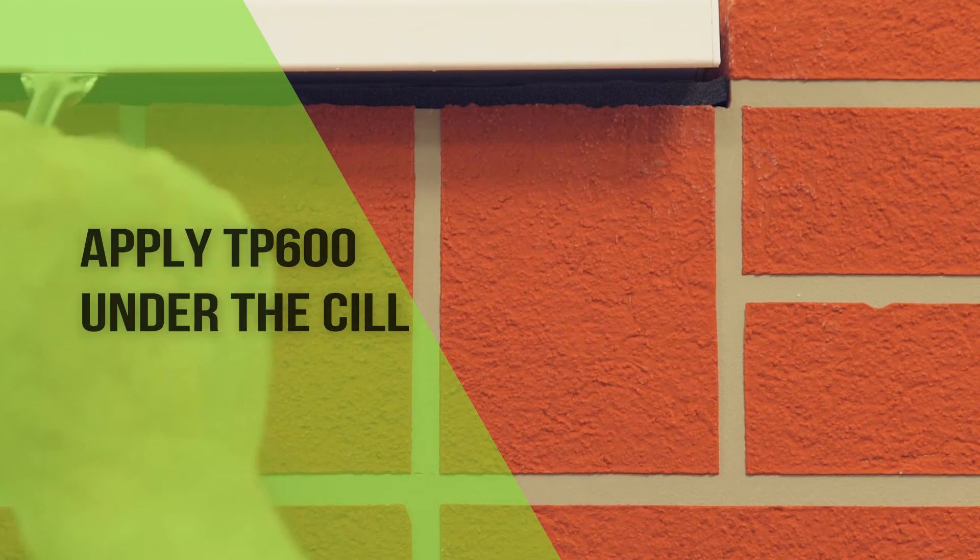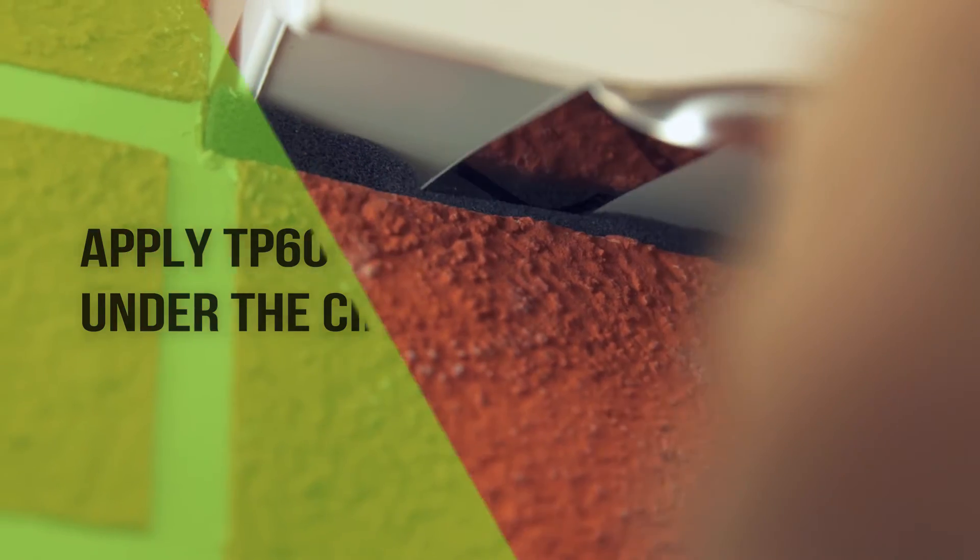The TP600 is applied under the sill and the gaps at the sill end caps sealed with silicon.